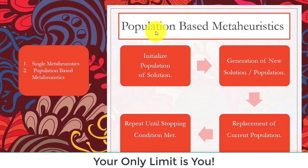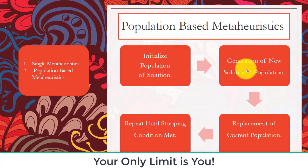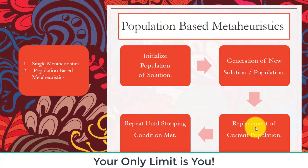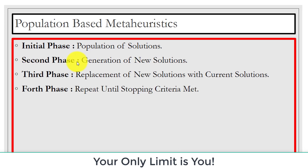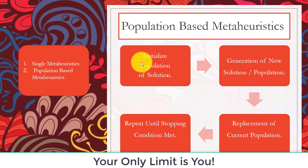How do population-based metaheuristic algorithms work? The first step is we initialize the population of solutions — that is the initialization phase. Next, we generate a new solution or population. After that, replacement is done — the current population is replaced with the new solution. Then we repeat this process until we meet the stopping criteria.